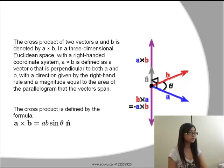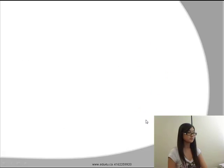The cross product is defined by the formula A cross B is equal to A times B times sine theta times N. N will be a vector that is perpendicular to A and B.